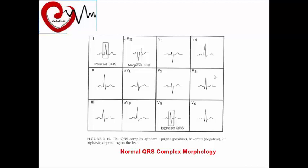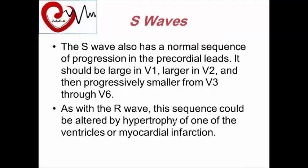The normal QRS morphology shows a small r in V1 increasing in size to V4 or V5, then smaller in V6. Normally, QRS must be negative in AVR, as all cardiac electrical activity is away from it. The biphasic transition of the QRS complex usually occurs at V3, where the R wave and S wave are mostly equal in amplitude. The S wave should be large in V1, larger in V2, then progressively smaller from V3 through V6.